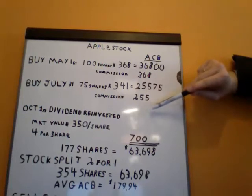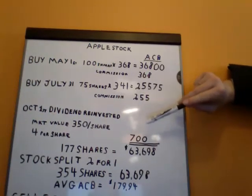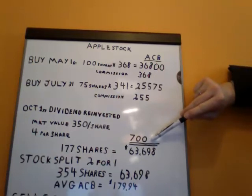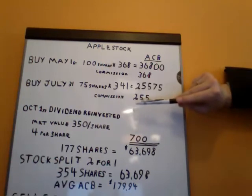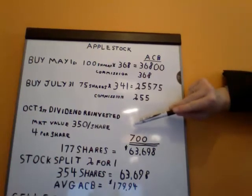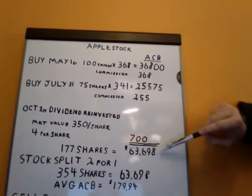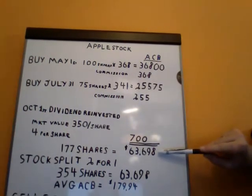So far we've built up all this adjusted cost base on 175 shares. Then October 1st, Apple decides to make a dividend payment of $4 per share. Now we own 175 shares — 175 times 4 is $700. That would go to the adjusted cost base. We're assuming the market value of that share on October 1st was $350, so we get two full shares. Now we have 177 shares with a total ACB of $63,698.